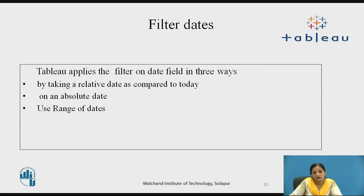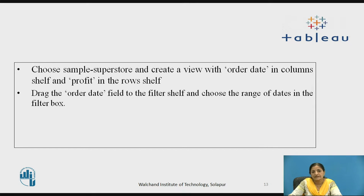Now we will move to the third type of filter: filtering on dates. Tableau applies a filter on a date field in three ways — by taking a relative date compared to today, by taking an absolute date, and third, using a range of dates. For example, using the same data source superstore.xls, create a view with order date in the column shelf and profit in the row shelf. Drag the order date field to the filter shelf and choose Range of Dates in the filter box.